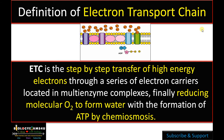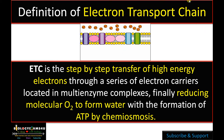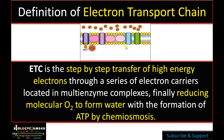Let's begin with the definition of electron transport chain. Electron transport chain is the step-by-step transfer of high-energy electrons through a series of electron carriers located in multi-enzyme complexes, finally reducing molecular oxygen to water with the formation of ATP by a process called chemiosmosis.